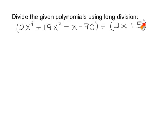And if you don't, you might want to first review that algorithm before attempting it with polynomials. So to begin with, we're going to take our divisor, and the divisor is the 2x plus 5, and we're going to put that on the outside of the division, 2x plus 5.